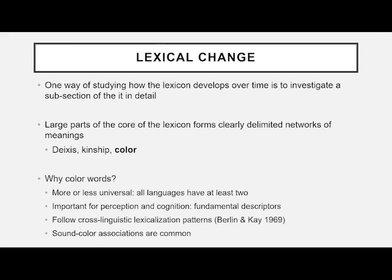If you want to study how the lexicon develops, one way is to look at some subsection of it. Luckily, there are nicely delimited subsections like networks of meanings such as deixis, kinship terms, and also color words. We chose color words because they are more or less universal — all languages tend to have at least two — they are important for perception and cognition as fundamental descriptors, they follow cross-linguistic lexicalization patterns, and sound-color associations are incredibly common.